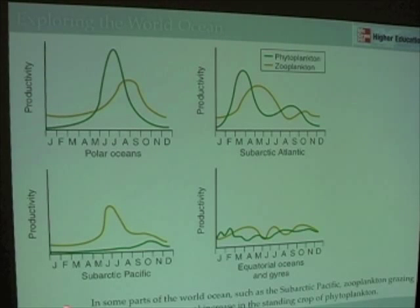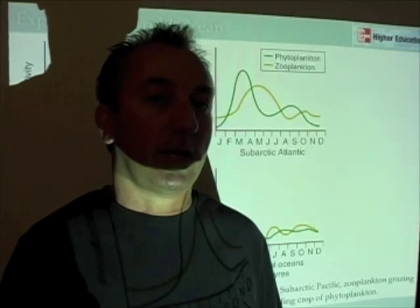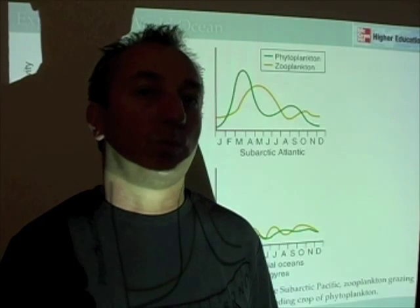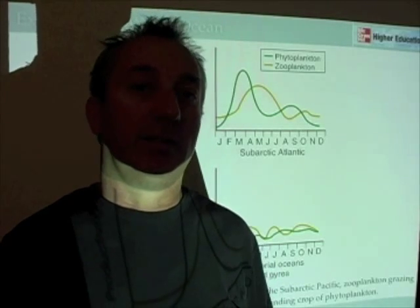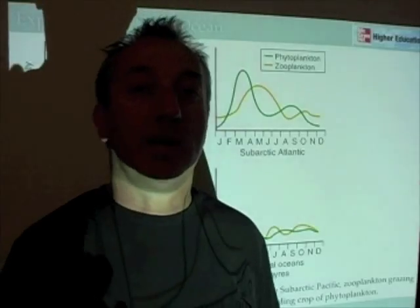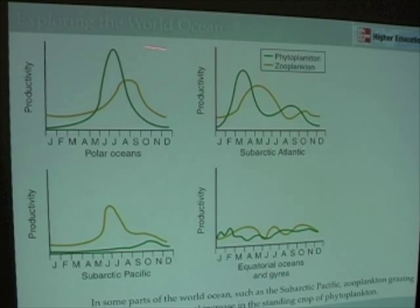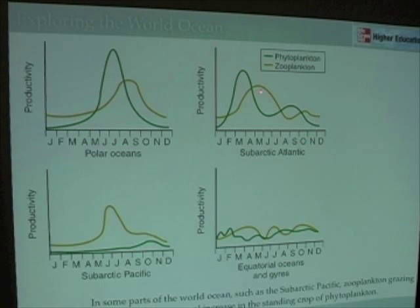This is a set of graphs you find in chapter 13.12, and it's one of those sets of graphs that takes some studying, and it's also one of those graphs that's worth a thousand, if not a million, if not billions of words. Oceanographers have spent many years, if not decades, researching these graphs. What we see here are variations in the abundance of phytoplankton, as shown in green, and zooplankton, as shown in brown, throughout the year in four different environments.